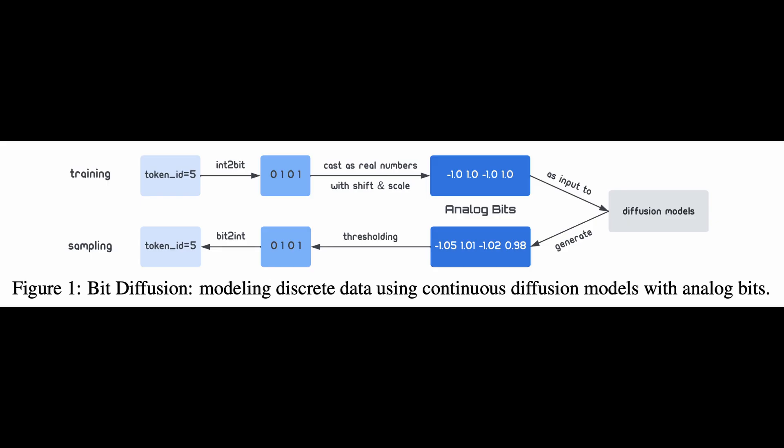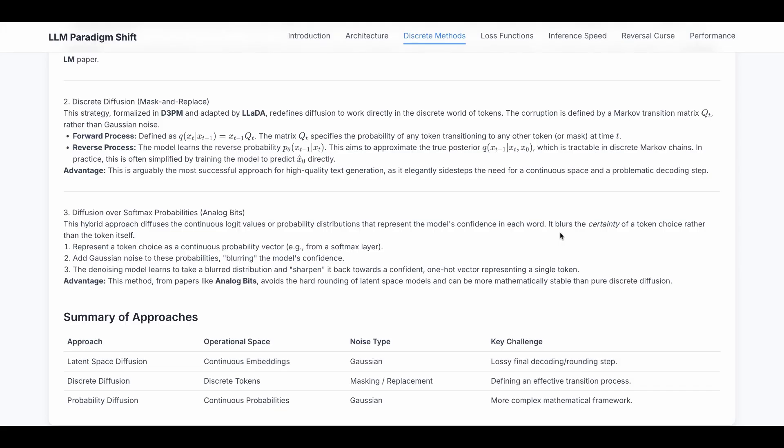It diffuses the continuous logit values or probability distribution that represent the model's confidence in each word. So it blurs the certainty of a token choice rather than the token itself. It represents a token choice as a continuous probability vector from a softmax layer. So you are no longer determined to be this token, instead you are a probability distribution of multiple vectors.